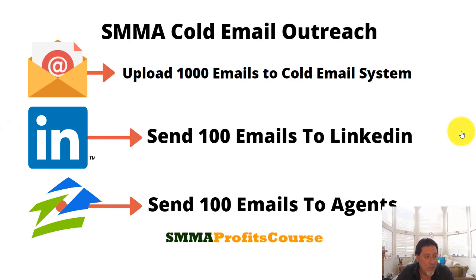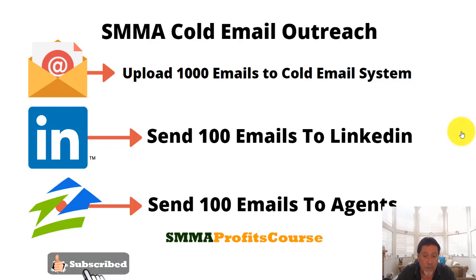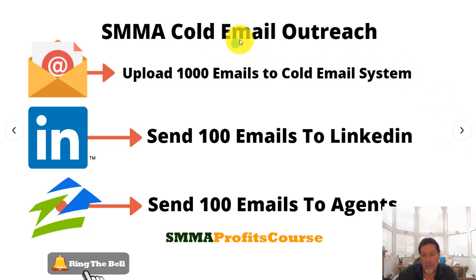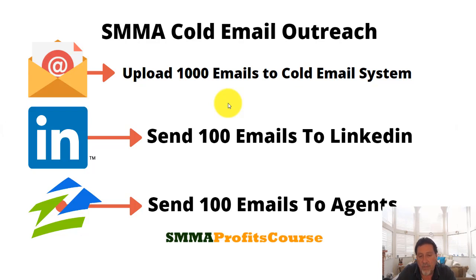People want to know what else is new. We added a bunch of new scripts and new landing pages as well. The main thing is the 1,000 emails for the real estate niche only. Now, email outreach — what does this really mean? How do we send out so many emails? People always wonder how we do our outreach.